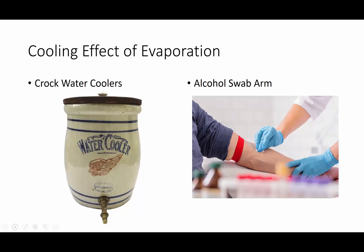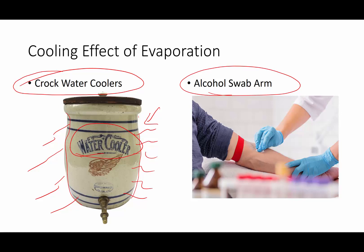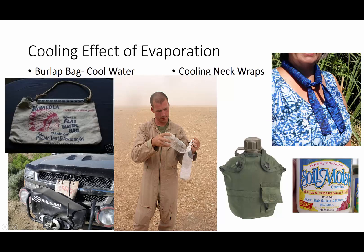Other examples of the cooling effect of evaporation: we talked about the alcohol swab on the arm. Old-fashioned water coolers used 150 years ago, long before the invention of electricity, were just big crocks — big pieces of pottery with a spigot inside. Because these things are slightly porous, a tiny little bit of moisture would evaporate from the outside, and as that microscopic evaporation occurred, it would cool down what was inside — literally a water cooler. Evaporative cooling.